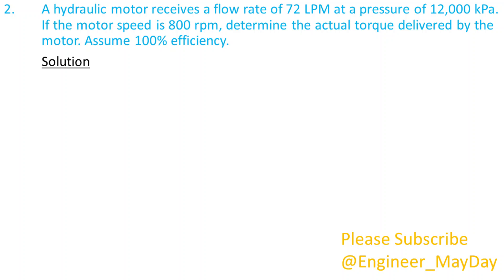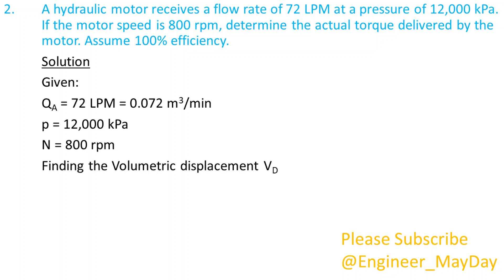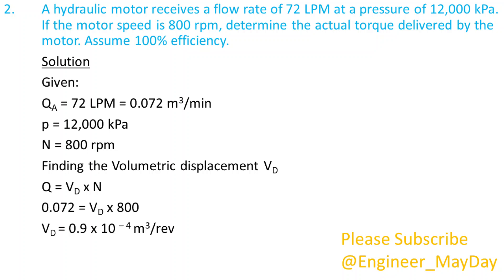Solution. Given: actual flow rate QA equals 0.072 cubic meters per minute. Pressure P equals 12,000 kilopascals. Motor speed n equals 800 revolutions per minute. Finding the volumetric displacement VD. VD equals 0.9 times 10 to the power negative 4 cubic meters per revolution.